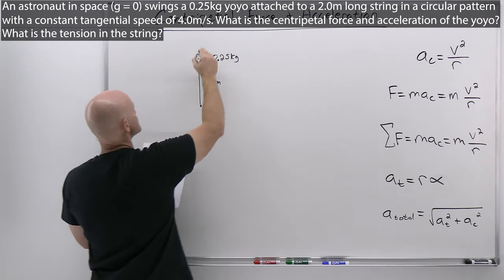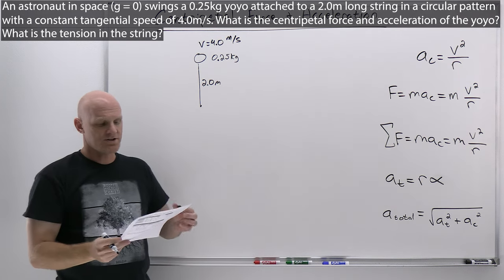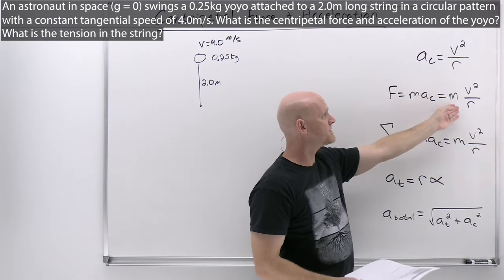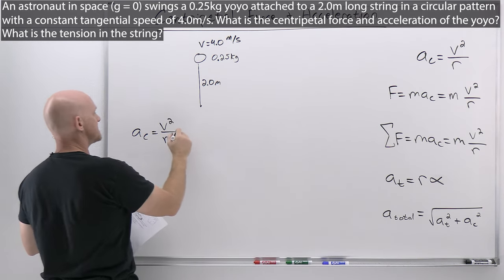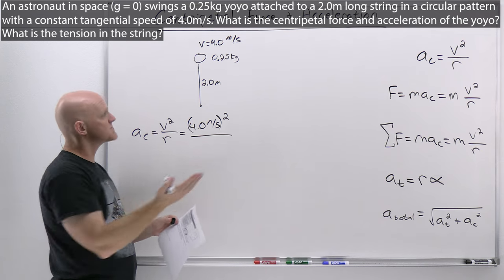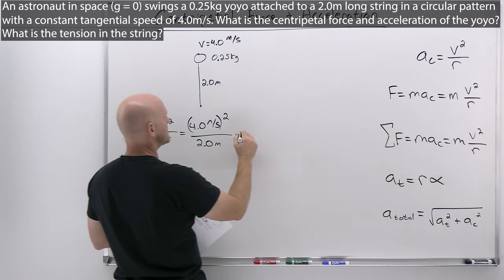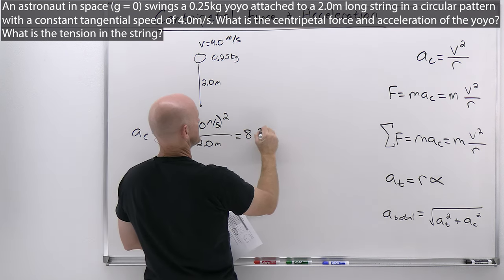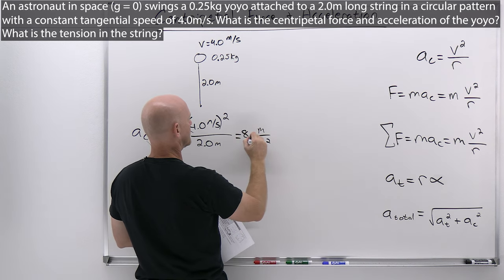We want the centripetal force and acceleration of the yo-yo — it's pretty much plug and chug. Centripetal acceleration is just v²/r. We needed the tangential speed, which was simply provided as 4.0 meters per second, squared, divided by the radius of 2.0 meters. Four squared is 16 divided by 2 gives us 8. Notice the units: meter squared per second squared divided by meters gives meters per second squared. To two sig figs, that's 8.0 meters per second squared.